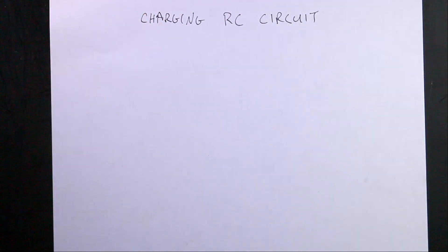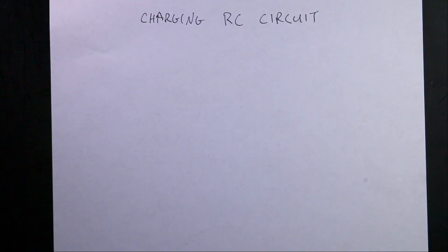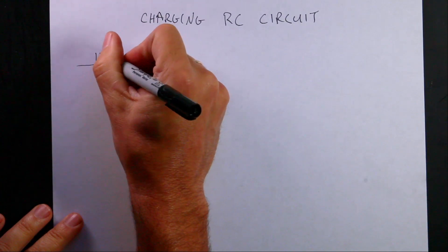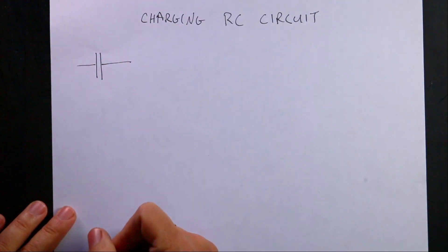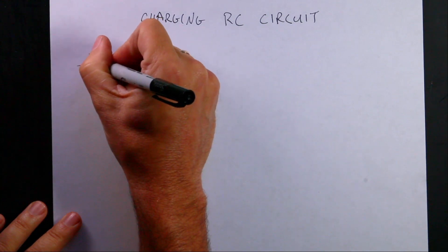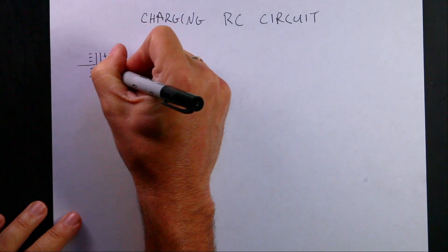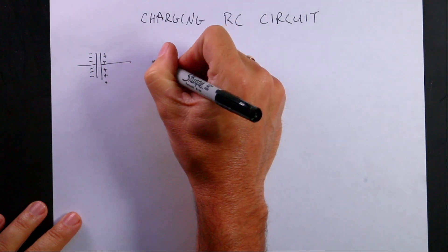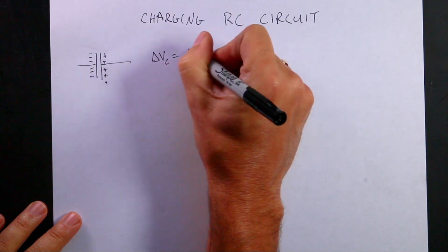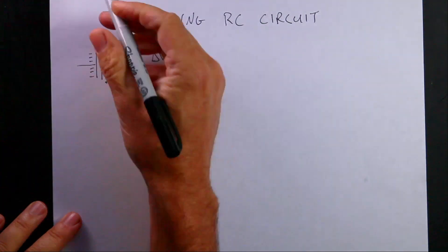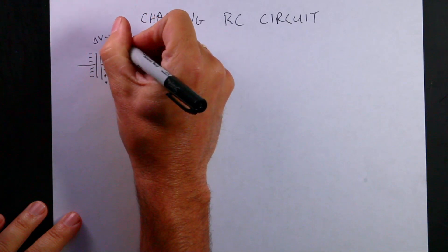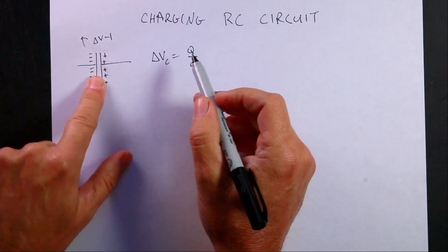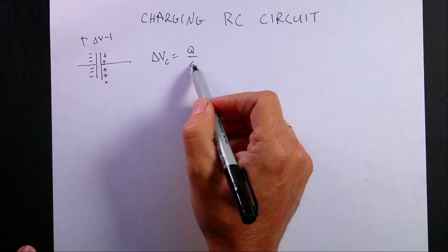Let's put away our toys and start with RC circuits. Let's start with a capacitor in general. There's my symbol for a capacitor. If I have negative charge on one side and positive charge on the other, I can say delta V_C equals Q over C. The change in potential delta V across the capacitor is equal to Q — the total charge on one plate — divided by C, the capacitance.